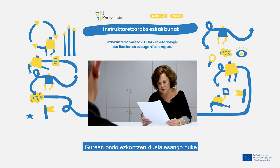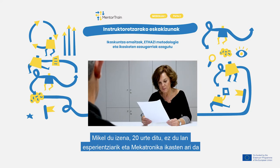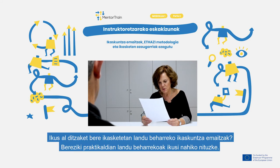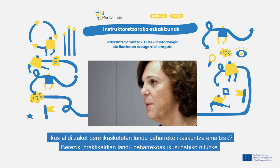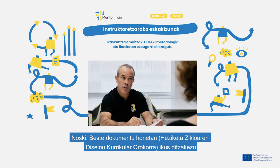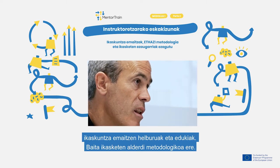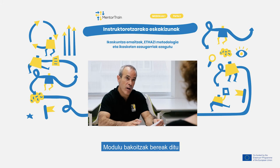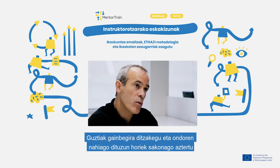He seems to fit in our organization. I see he's Michael, he's 20 years old, he has no work experience, and he's studying industrial mechatronics. Could I check the learning outcomes he has to achieve during his studies, and especially those related to the apprenticeships? In this document — this is the general curricular design of industrial mechatronics — you can see the objectives, the learning outcomes, as well as the teaching and learning methods. Every module has its own ones and we can analyze them one by one and discuss those you would like to know better.